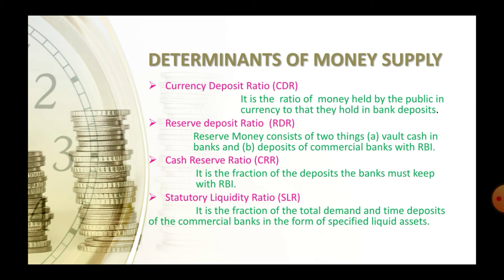Now let us look at the determinants of money supply. The first is CDR, the currency deposit ratio. It is the ratio of money held by the public in currency to what they hold in bank deposits. The currency deposit ratio shows the amount of currency people hold as a portion of aggregate deposits.